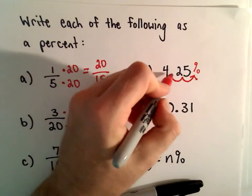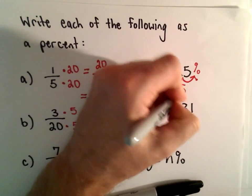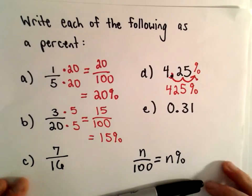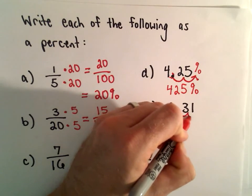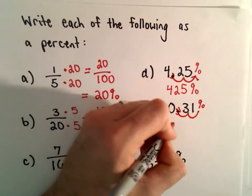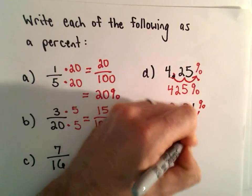So four point two five would be the same thing as 425%. Zero point three one, if we move that two places to the right, make it a percentage, it says we would have 31%.